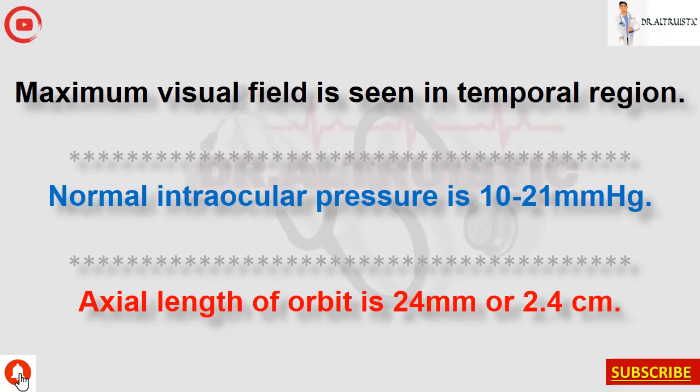Maximum visual field is seen in the temporal region. Normal intraocular pressure is 10 to 21 mmHg. Axial length of the orbit is 24 millimeters or 2.4 centimeters.